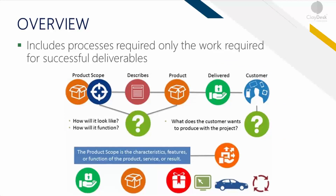Here's the overview. Scope management includes all of the processes required to ensure that the project includes all of the work required — from the dev team, from the QA side, and so on — and only the work required to complete the project successfully. The scope needs to be well-defined and transparent, encompassing all relevant tasks. Managing the project scope is primarily concerned with not only defining, but also controlling what is and is not included in the project.